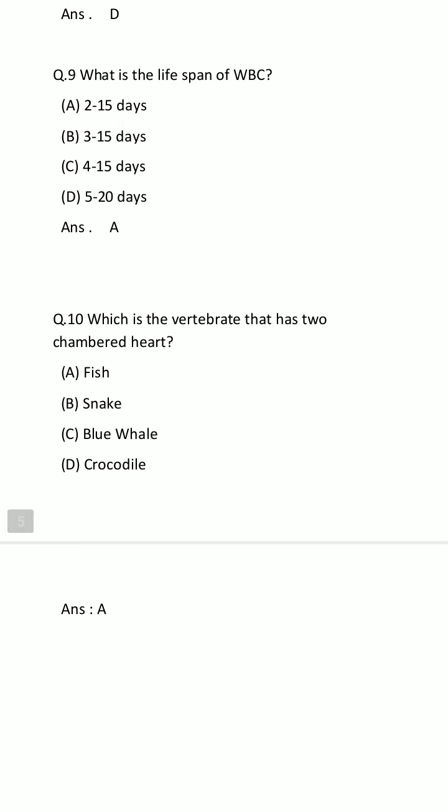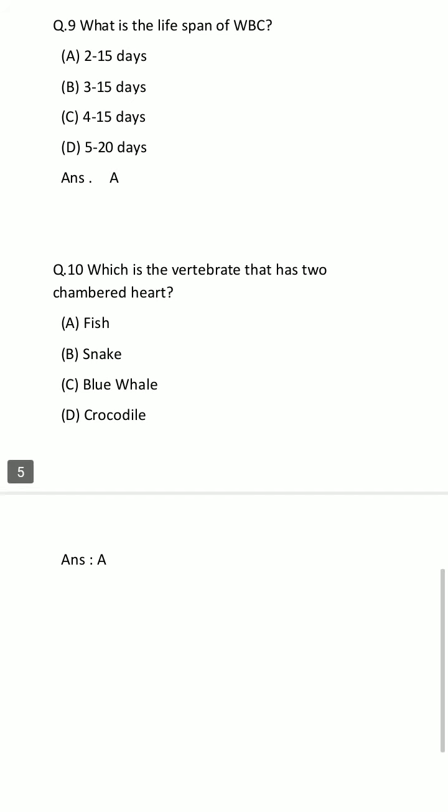The last question, which is question number 10: Which vertebrate has a 2-chambered heart? Option A: Fish. Option B: Snake. Option C: Blue whale. Option D: Crocodile. Your timeline starts now. The time is finished. The answer is Option A: Fish.